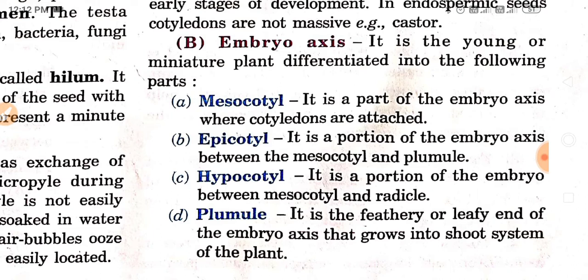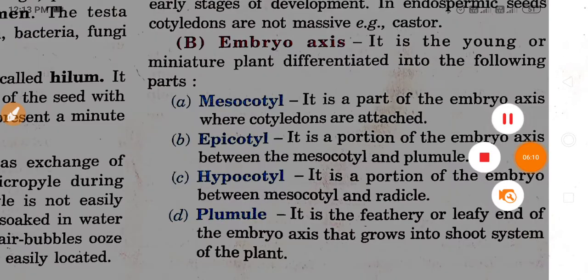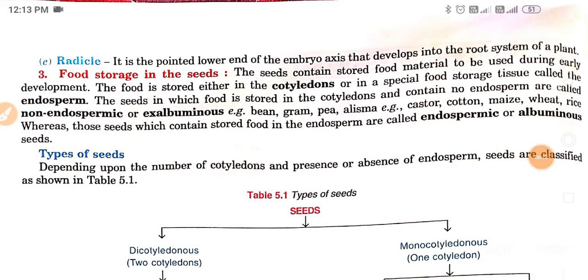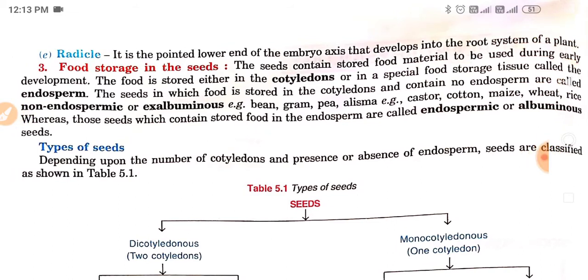The plumule is the feathery or leafy end of the embryo axis that grows into the shoot system of the plant. The plumule is responsible for shoot formation. The radicle is responsible for the formation of the root. It is the pointed lower end of the embryo axis that develops into the root system of the plant.